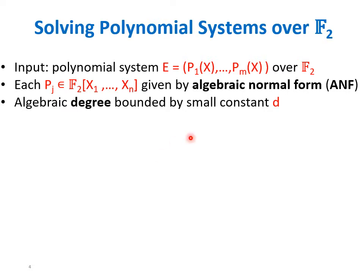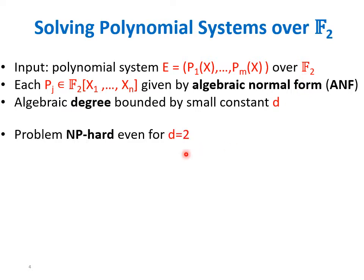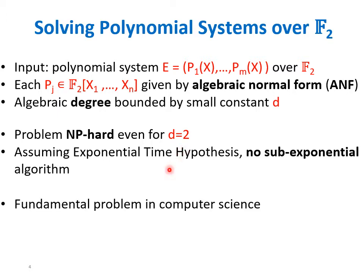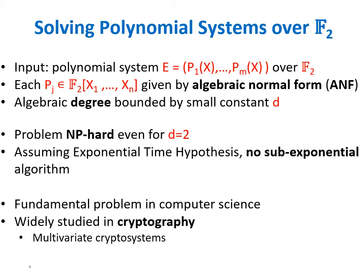These algorithms were based on the so-called polynomial method in circuit complexity, which is a technique for proving circuit lower bounds that has recently been applied in algorithm design. In this work, we will be mainly interested in solving polynomial systems over the field F2. The problem is NP-hard even for quadratic systems, and assuming the exponential time hypothesis, there is no sub-exponential algorithm for the problem. However, it is a fundamental problem widely studied in cryptography, especially in multivariate cryptosystems.